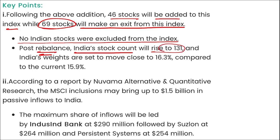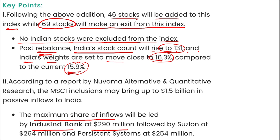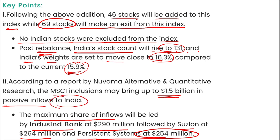Post-rebalance, India's stock count in the MSCI index will rise to 131 and India's weight is set to move close to 16.3% compared to the current 15.9%. The maximum share of inflows will lead IndusInd Bank at $290 million, followed by Suzlon at $264 million and Persistent Systems at $254 million. Inclusion into MSCI will bring up to $1.5 billion in passive inflows to India.